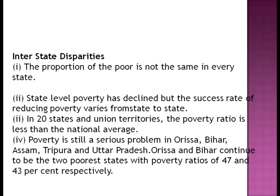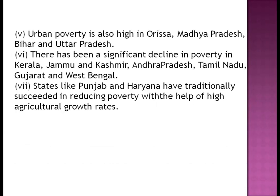Interstate disparities: the proportion of the poor is not the same in every state. Poverty has declined but the success rate varies from state to state. In 20 states and union territories, the poverty ratio is less than the national average. Poverty remains a serious problem in Orissa, Bihar, Assam, Tripura, and Uttar Pradesh — with Orissa and Bihar being the two poorest states at 47% and 43% respectively. There has been significant decline in poverty in Kerala, Jammu & Kashmir, Andhra Pradesh, Tamil Nadu, Gujarat, and West Bengal. Punjab and Haryana have traditionally succeeded in reducing poverty through high agricultural growth.